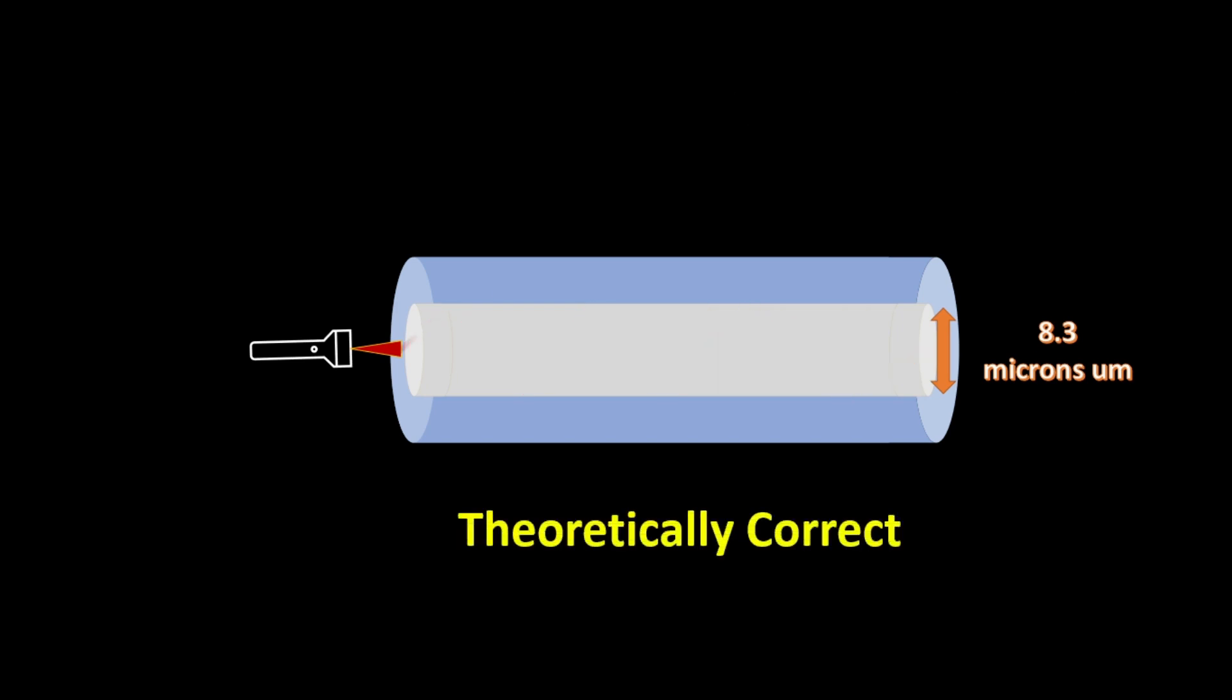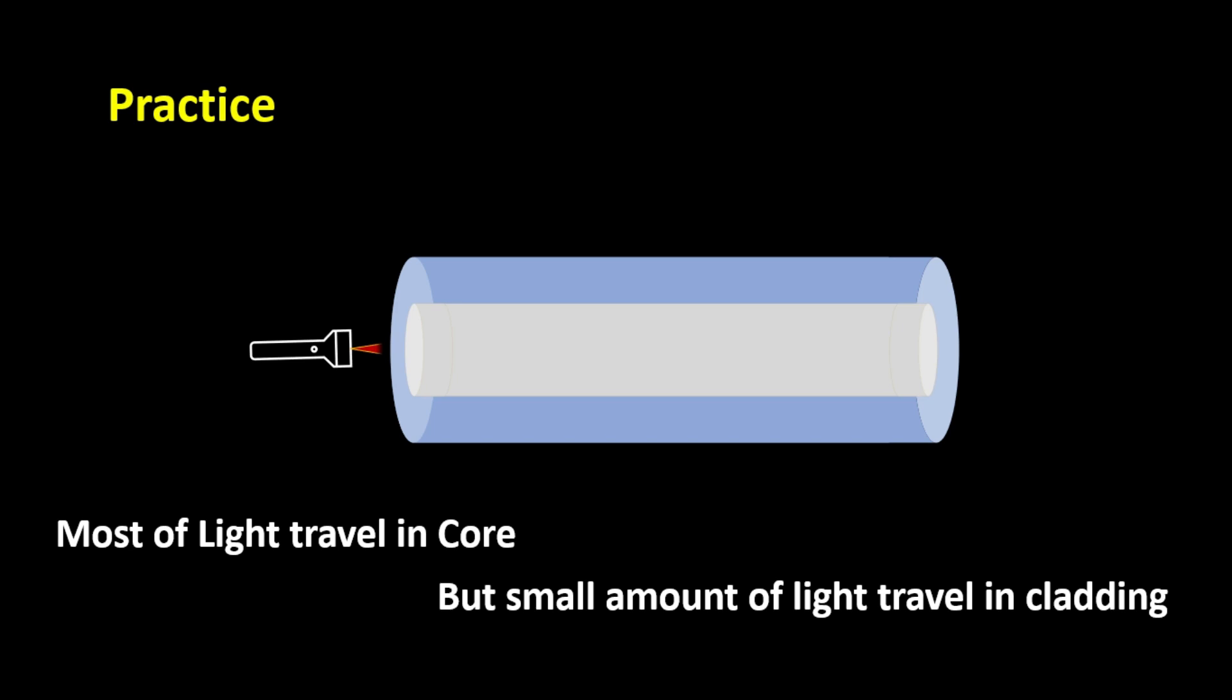This phenomenon is theoretically correct. But in practice, when we transmit light, most of the light propagates in the core, but a small part of the signal propagates in the cladding near the core.